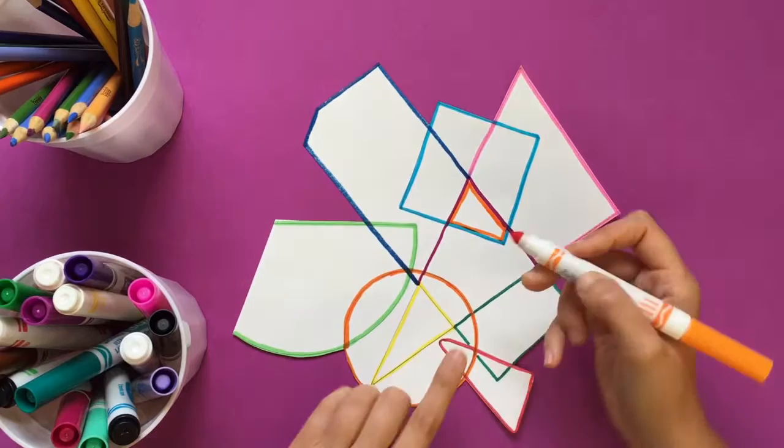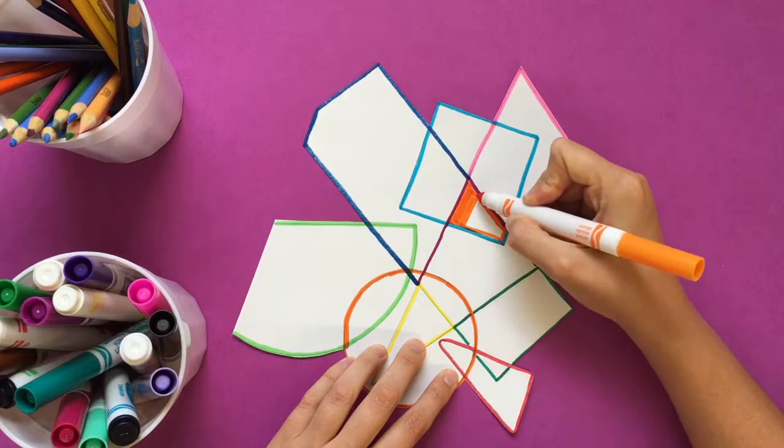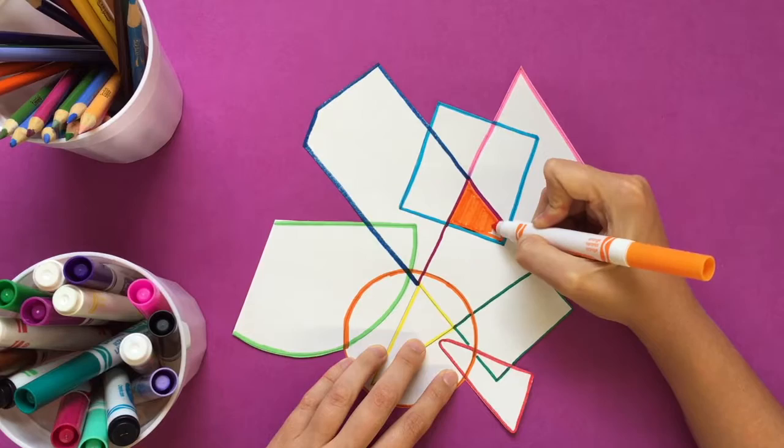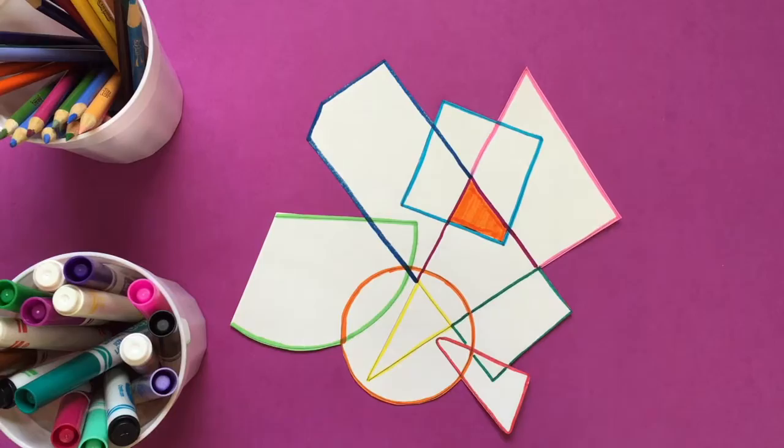Then you can use the wide side of your marker and just create lines that go in the same direction. That's going to be an easy way to color in that shape neatly.